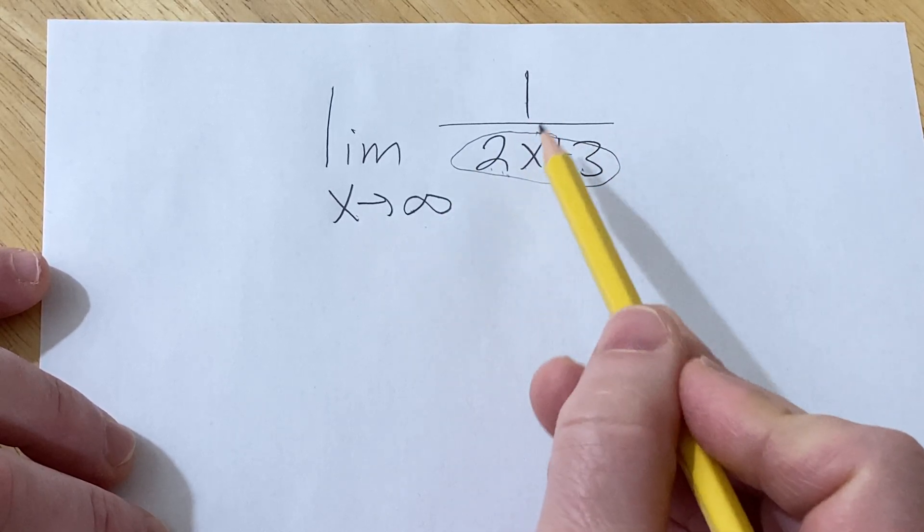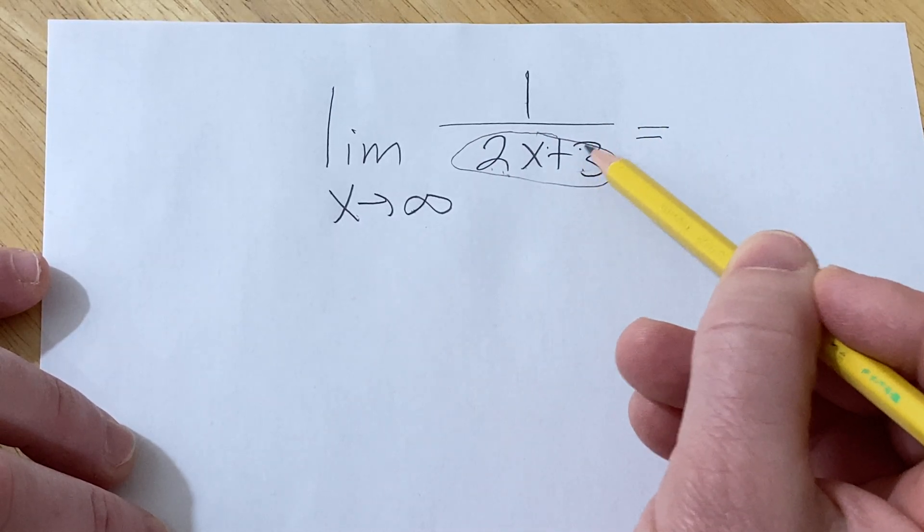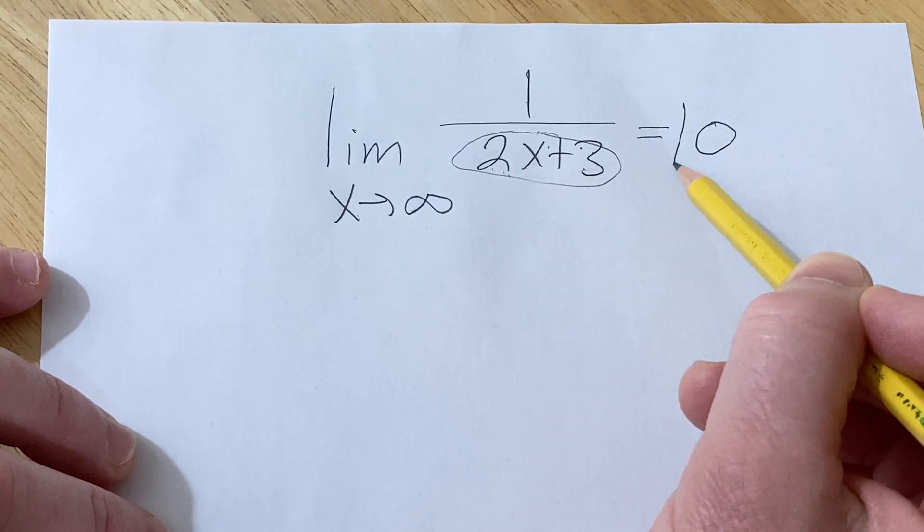So basically you have 1 over a number that's getting larger and larger. So this fraction is getting smaller and smaller, and so the answer is going to be 0.